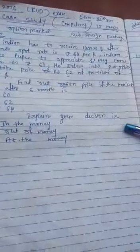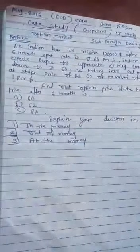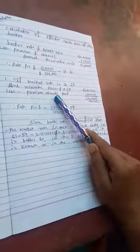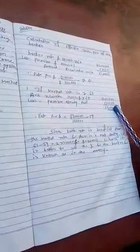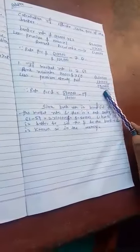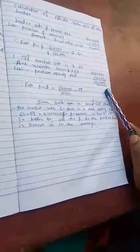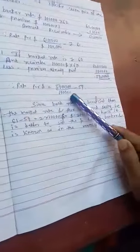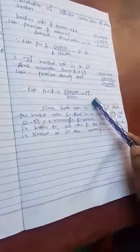For in the money, the market rate is Rs. 60. Amount receivable is 1 lakh into 60, that is 60 lakhs, less premium already paid of 1 lakh, giving 59 lakhs. The rate per dollar is 59 lakh divided by 1 lakh, which equals 59.